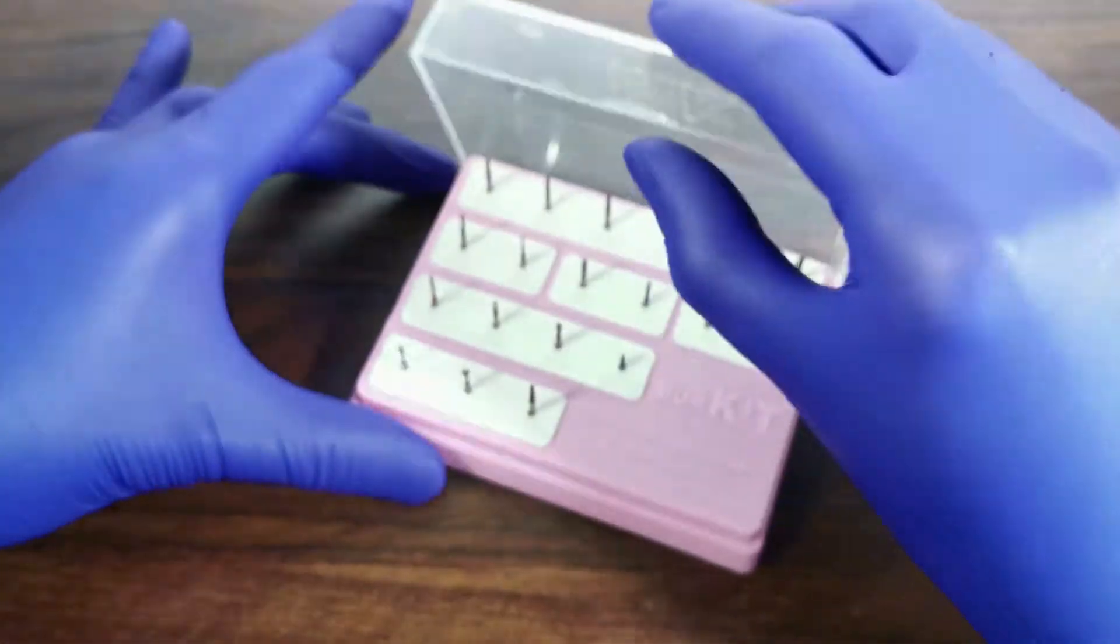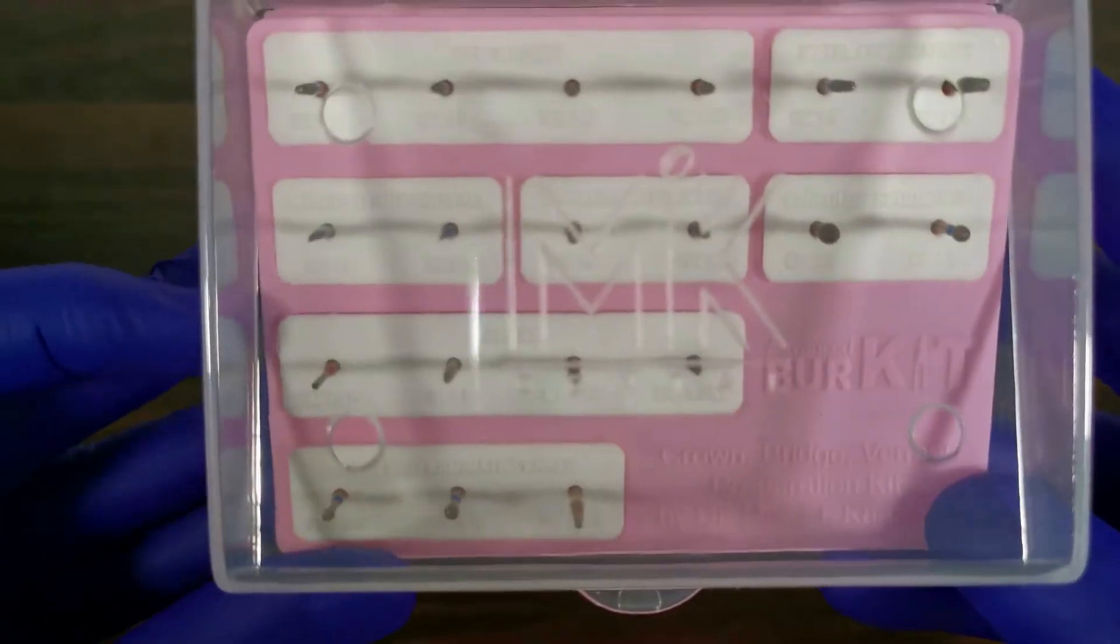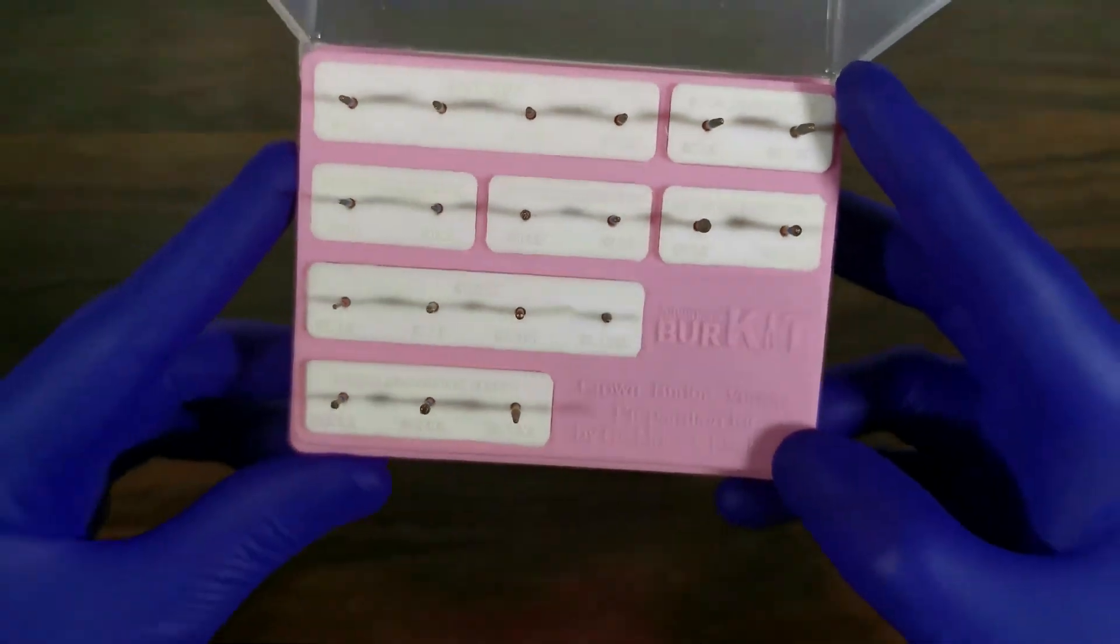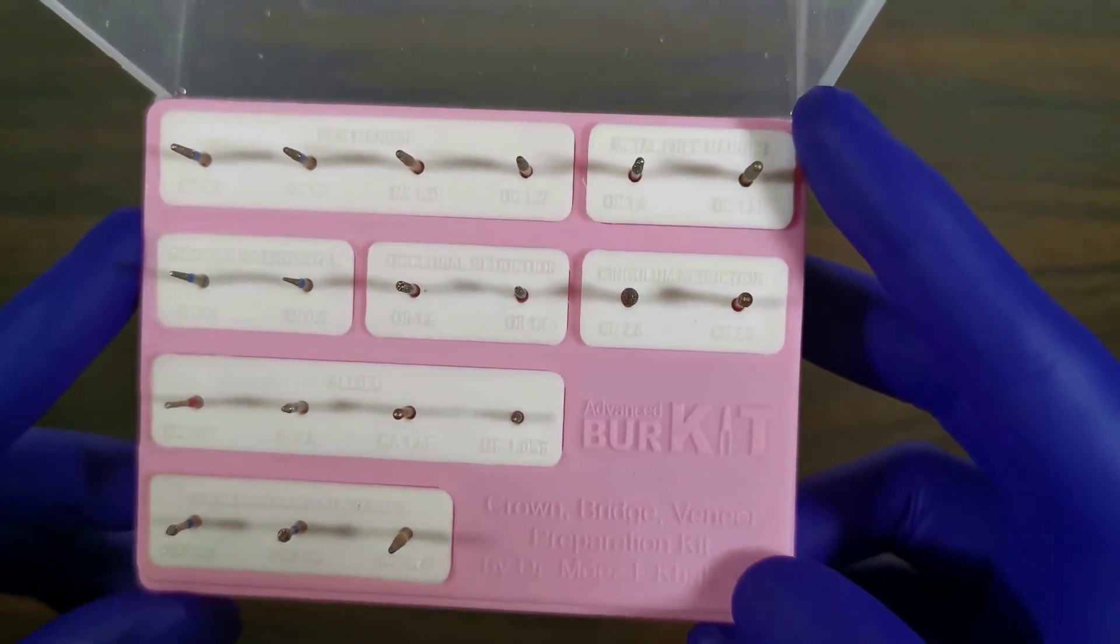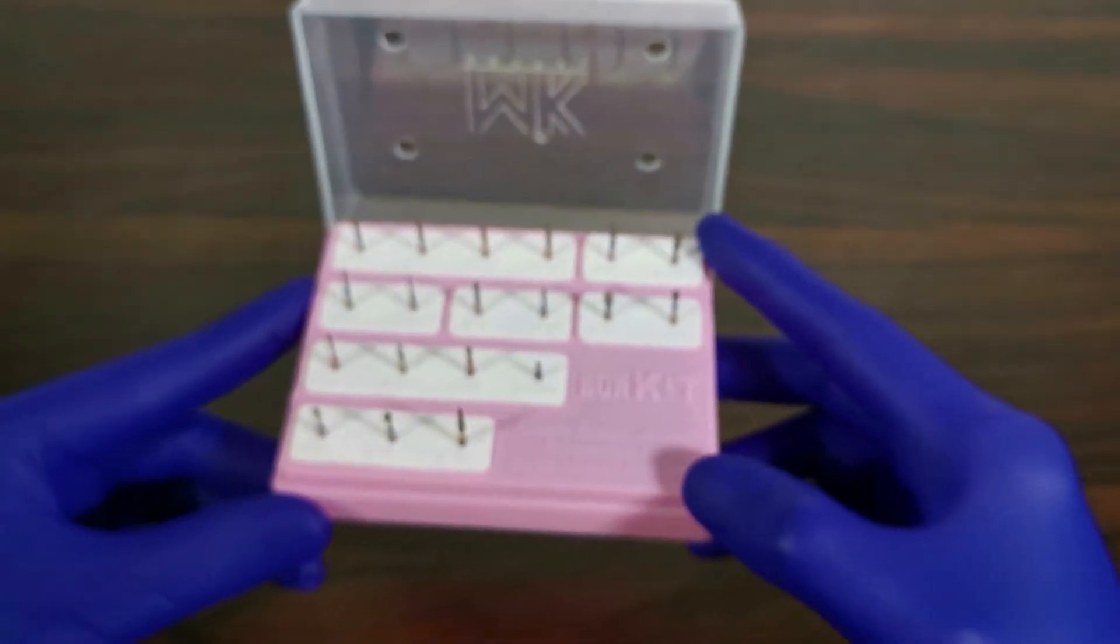In addition, the number associated with each burr indicates the diameter of the burr at its tip or its functional length. For example, DC 1.4 burr is a deep chamfer burr with tip diameter of 1.4 mm. IR 2.0 is an incisal reduction burr with a functional length of 2 mm.